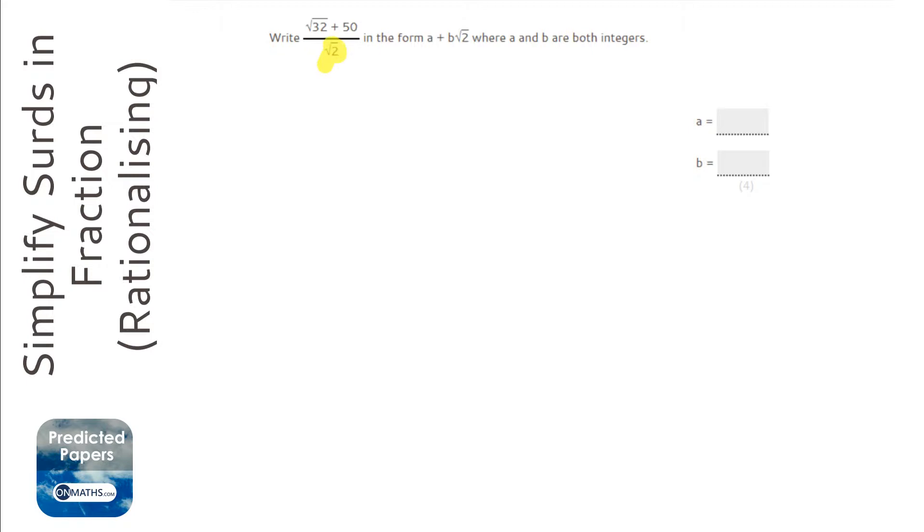So we are going to times top and bottom by whatever the surd is at the bottom, which is root 2. Now, don't forget we always put brackets around any numerator denominator that has more than two expressions, that will help us for later on. So we are going to times both of these by root 2.